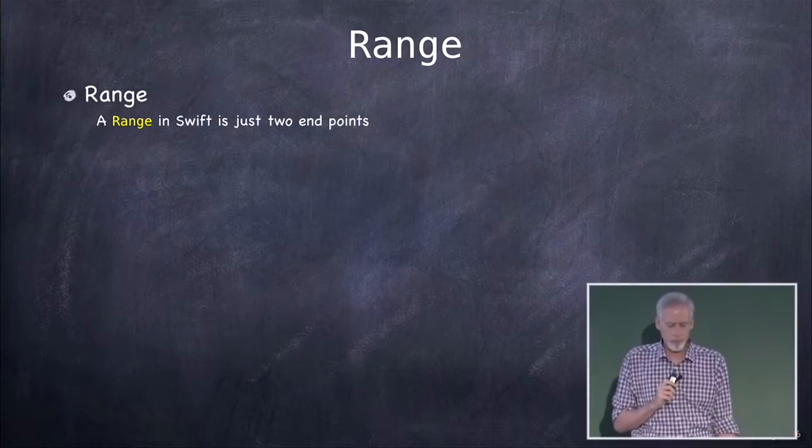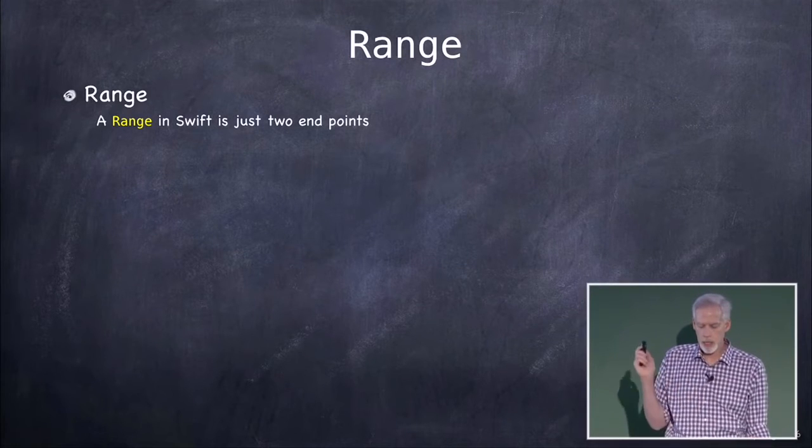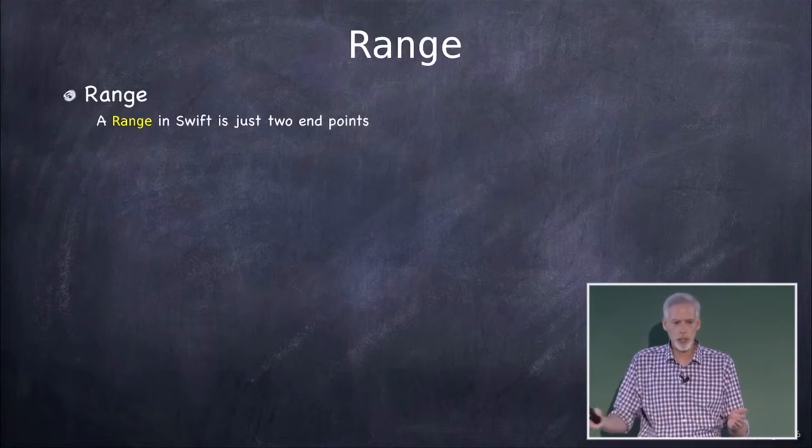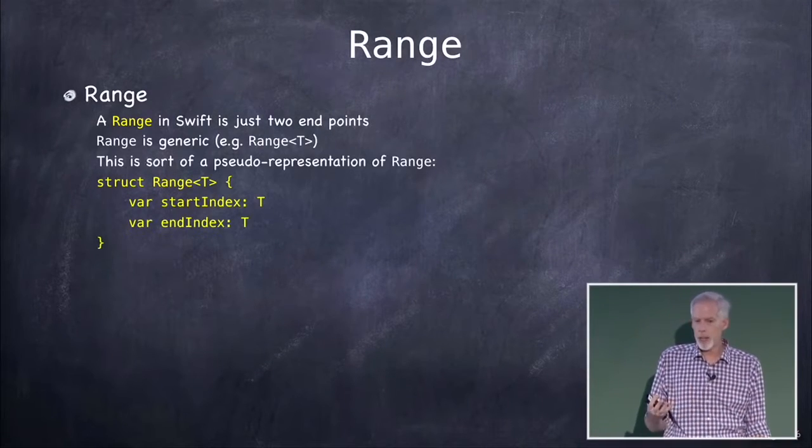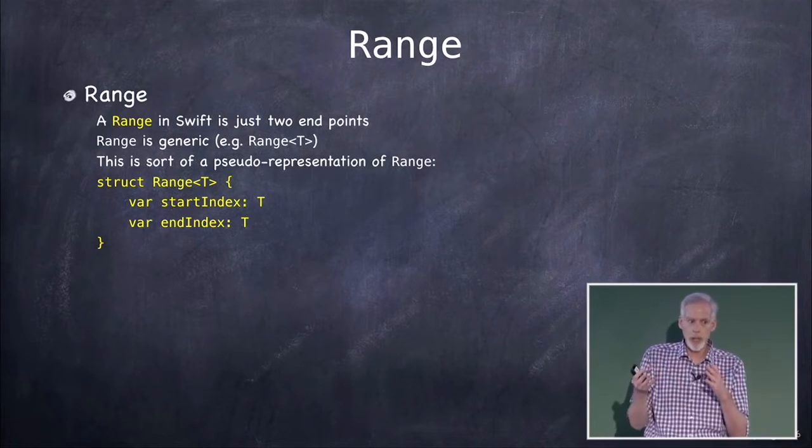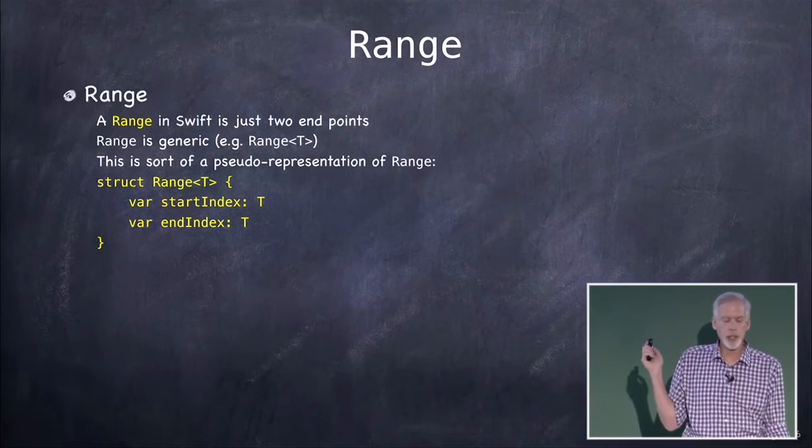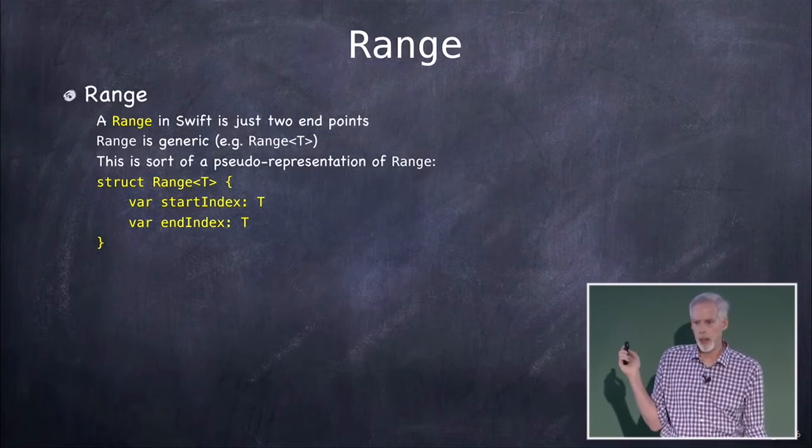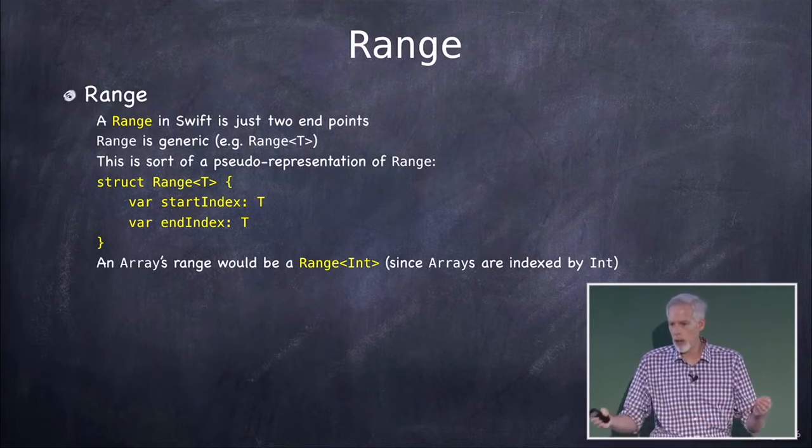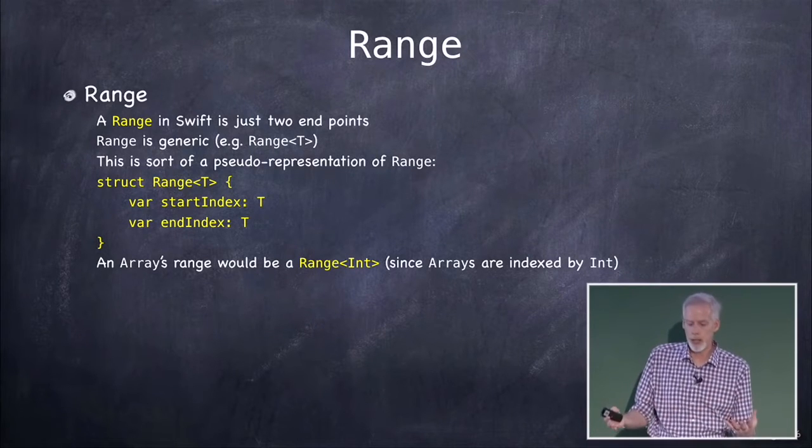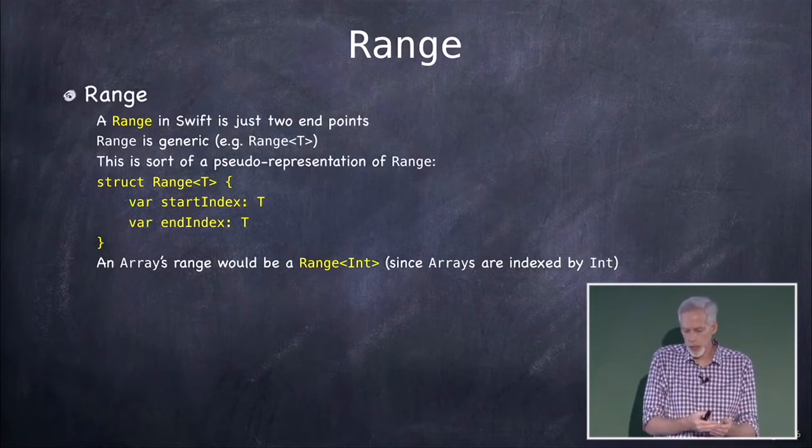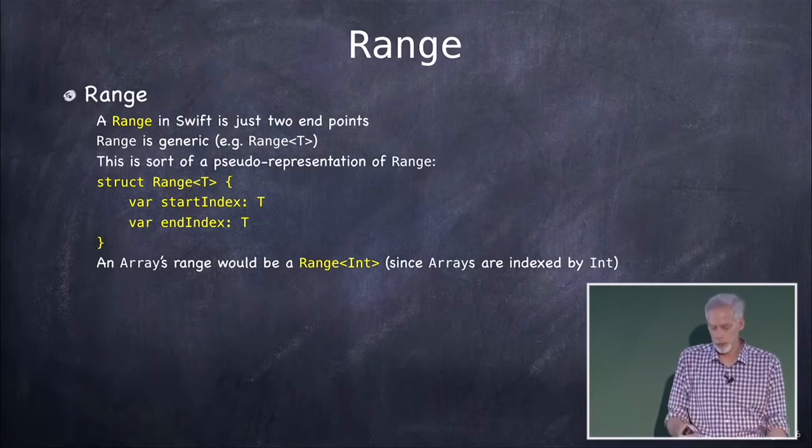Alright, range. So range is quite important actually in Swift. It's essentially just two endpoints of anything that can be represented consecutively. So range, the type is generic, like array. So you can have a range of ints. You can have a range of indexes into something or whatever. It really conceptually just has two things, a start index and a last index, an end index. An array's range, if you wanted to get a range into an array, it would be a range of ints because an array is indexed by ints. So you would have a range of ints. In fact, there are methods in array where you can say, give me this range of yourself and you specify it as a range.